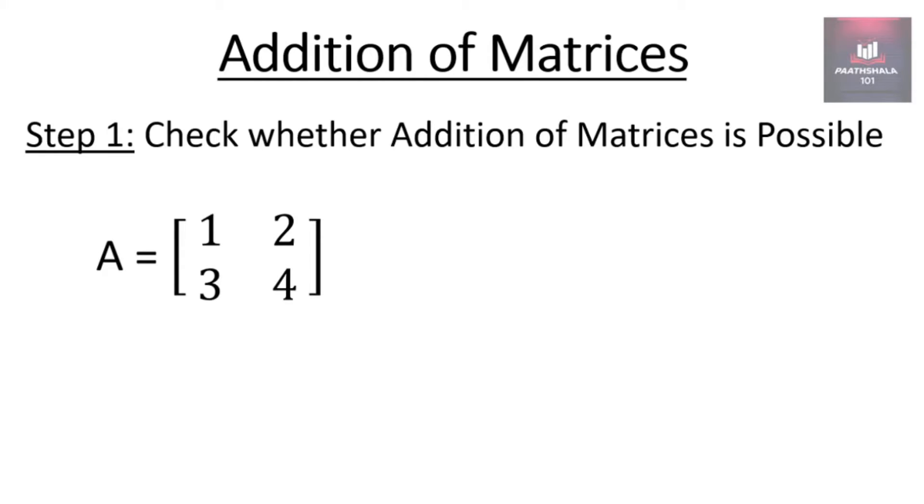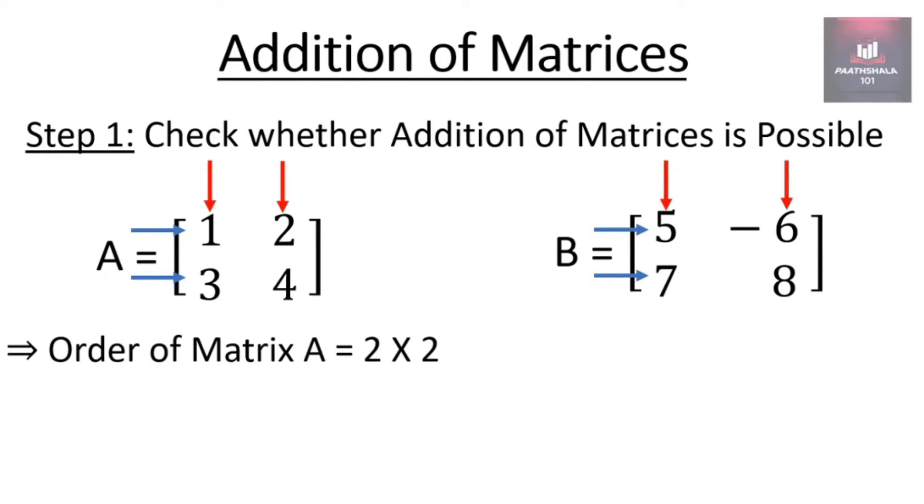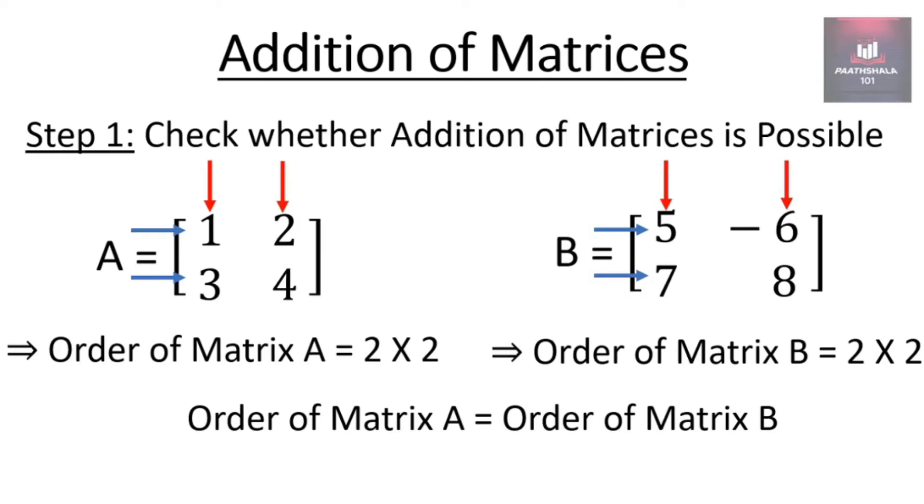A is a matrix which has two rows and two columns, so order of matrix A is 2 cross 2. Matrix B has two rows and two columns, so order of matrix B is 2 cross 2. As order of matrix A equals order of matrix B, therefore addition of matrices is possible.